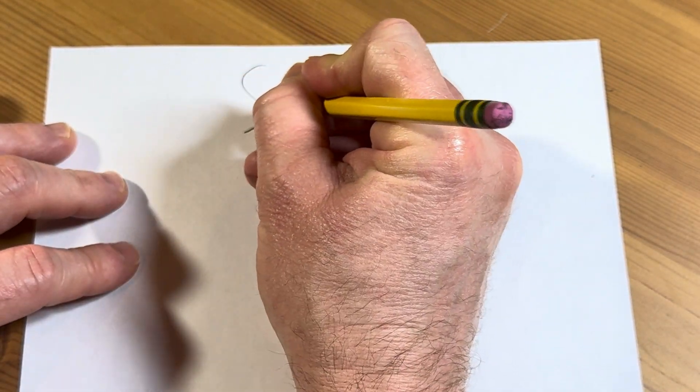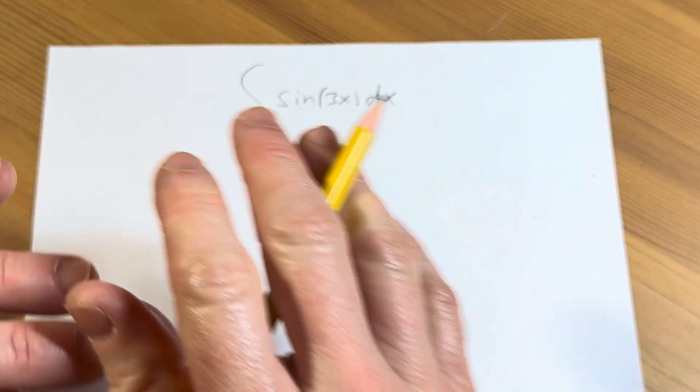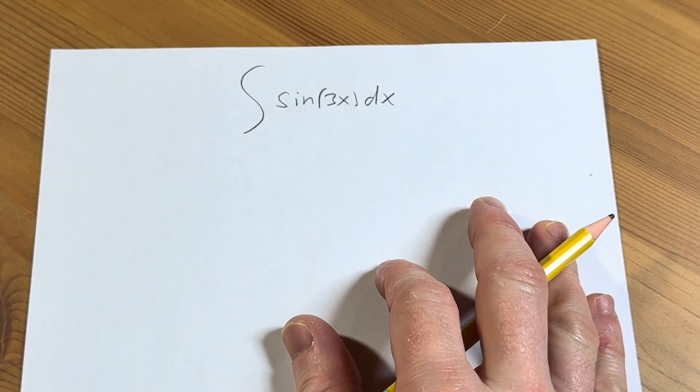The question is to integrate the sine of 3x with respect to x. So not something that's super hard, pretty straightforward.